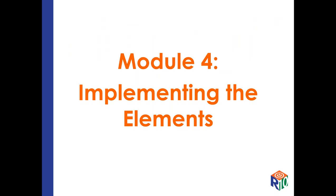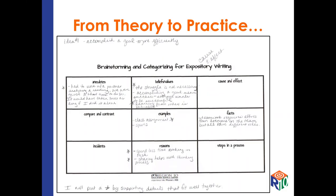For Module 4, we will focus on implementing these elements into student writing. Looking at from theory to practice — we've looked at all the supporting details and used the brainstorming and categorizing tool for reading, and now we can see how this can actually apply for writing as well. Once the students have developed their own idea, you would have them identify different types of supporting details that could support that idea. Words or phrases are used — these are not written in sentence form. This can be conducted in small individual settings. The whole point is just to get the kids to start brainstorming different types of supporting details.